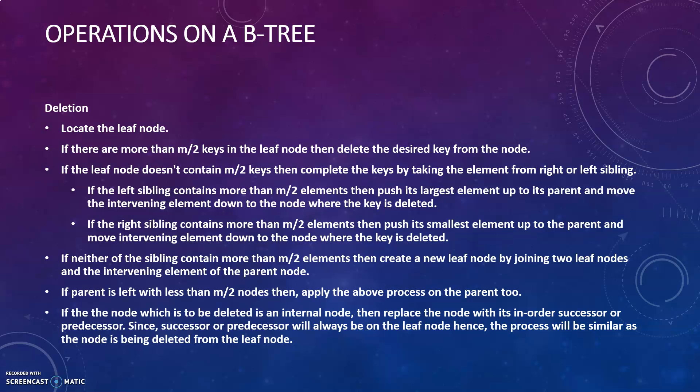If neither sibling has a sufficient number of keys, then you have to create a new leaf node by joining the two leaf nodes together, and then the intervening element is going to be the parent node. If the parent is left with less than the sufficient number of keys, you apply the same process stated above for the parent node too.